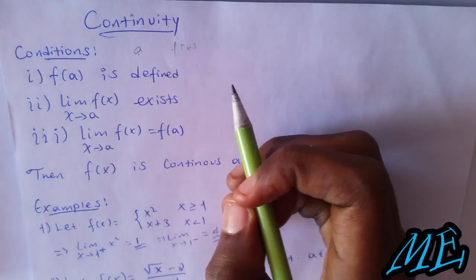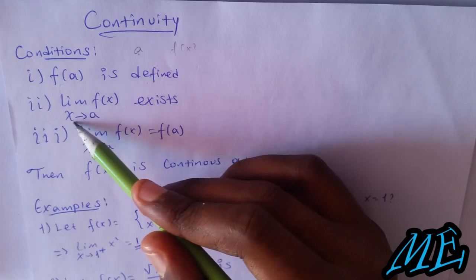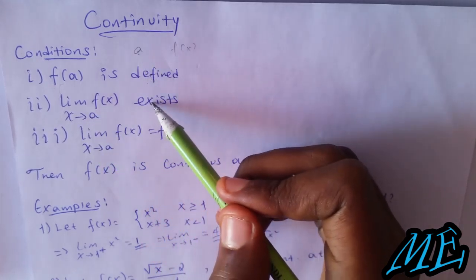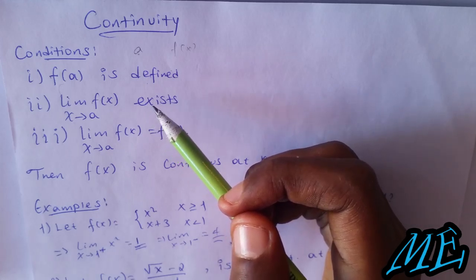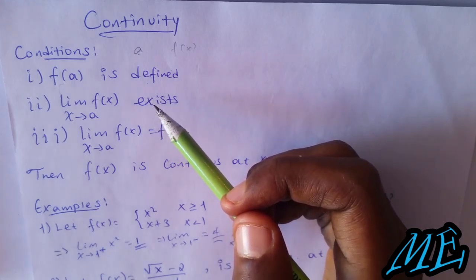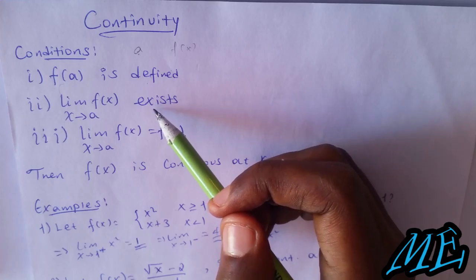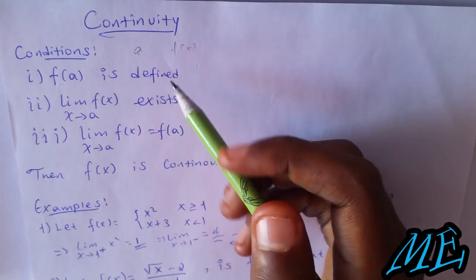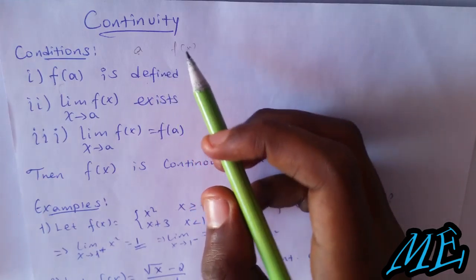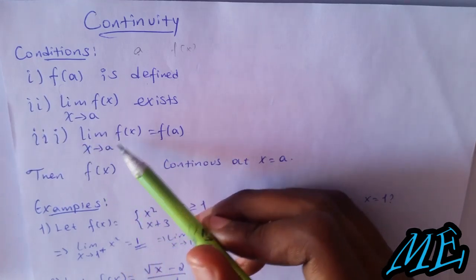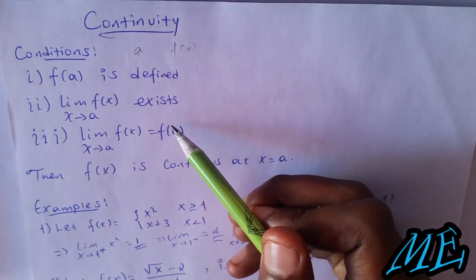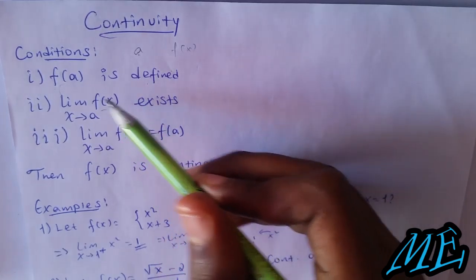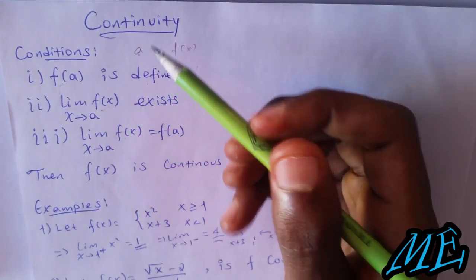Second, limit of f(x) as x approaches a exists. Third, limit of f(x) as x approaches a equals f(a). Then f(x) is continuous at x = a. So the limit and value must be equal.